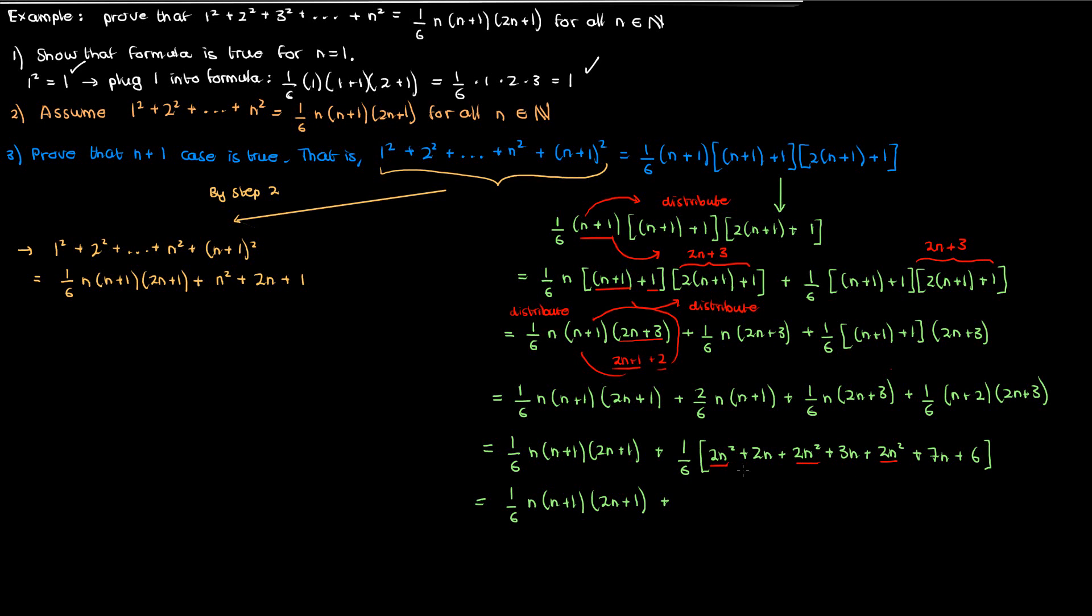the 2N squared here combines with the 2N squared here and the 2N squared here to give 6N squared, which when divided by 6 just gives you N squared. This gets added to 7N plus 3N plus 2N, which is just 12N. Divide that by 6, you get 2N. This then gets added to 6 over 6, which is just 1. So in the end, we have 1 over 6 times N times N plus 1 times 2N plus 1 plus N squared plus 2N plus 1, which is exactly equal to the left hand side from earlier. And since the N plus 1 case is true, we have therefore proven by mathematical induction that the sum of the first N squares is given by this formula.